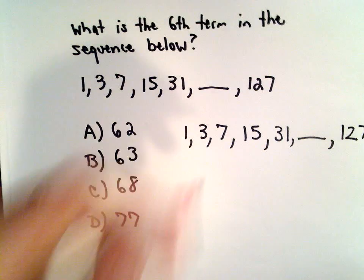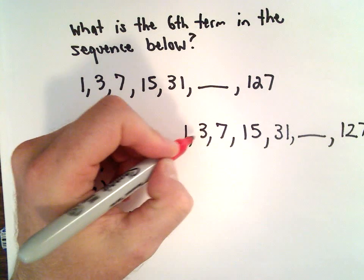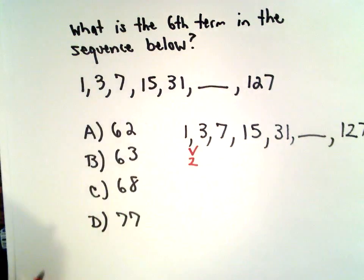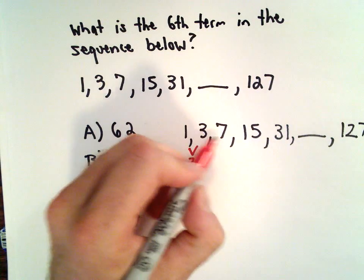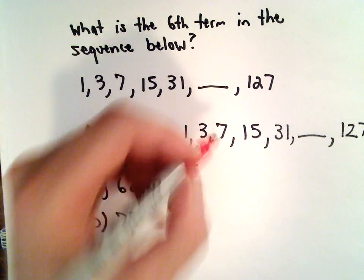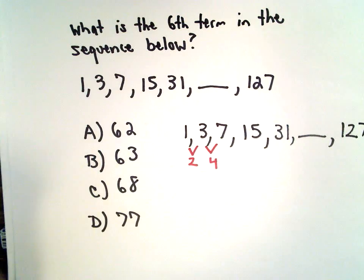Let's see, if I look at how far apart 1 and 3 are, well, 3 minus 1, those are 2 units apart. How far are 3 and 7 apart? Well, 7 minus 3, that gives me a difference of 4.